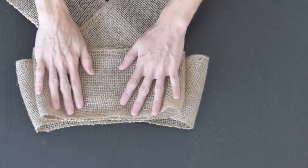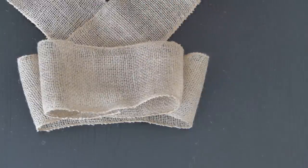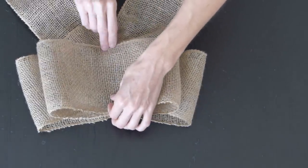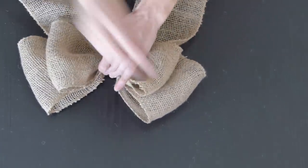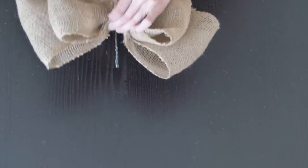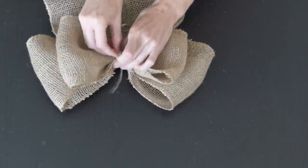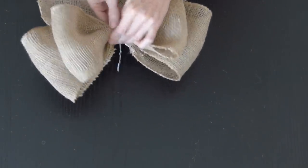Now grab the middle and cinch it in. Grab your twisty tie or floral wire, wrap that around the bow and secure it.